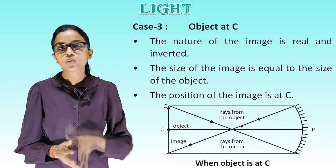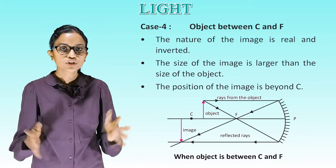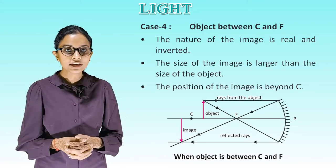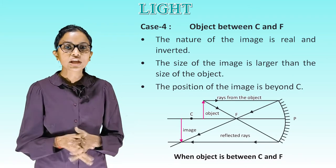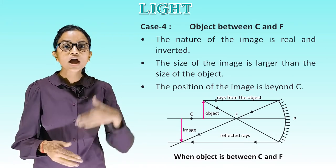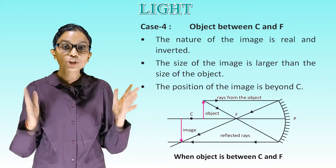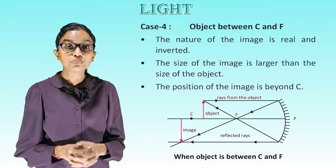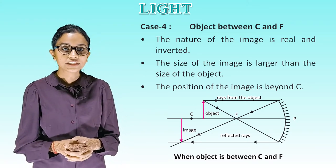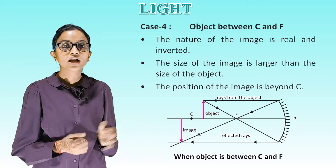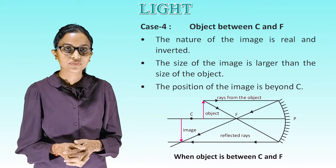Case 4 — object between C and F: the nature of the image is real and inverted. The size of the image is larger than the size of the object. The position of the image is beyond C. This is the diagram showing the object between C and F.